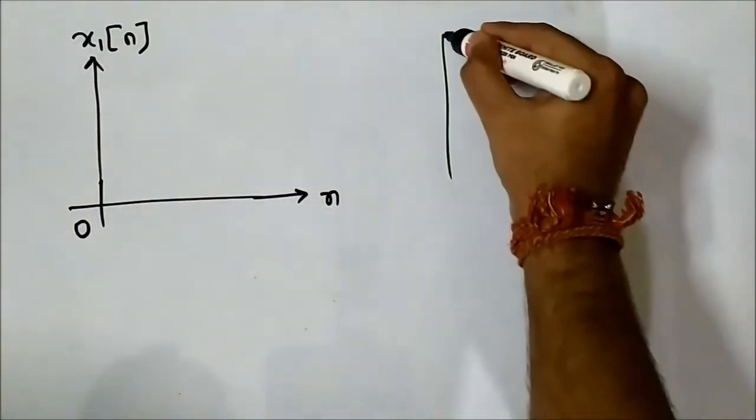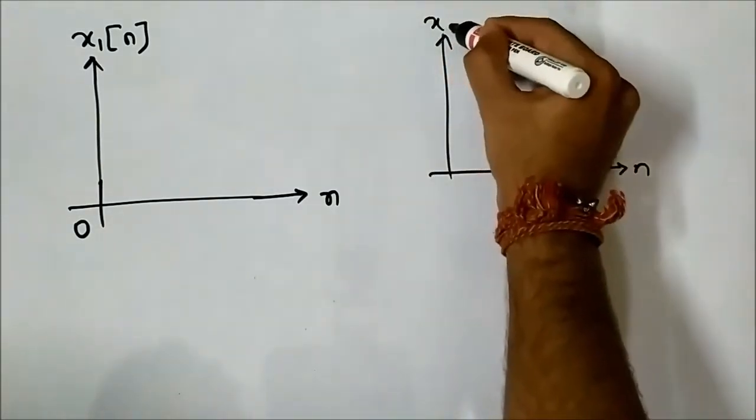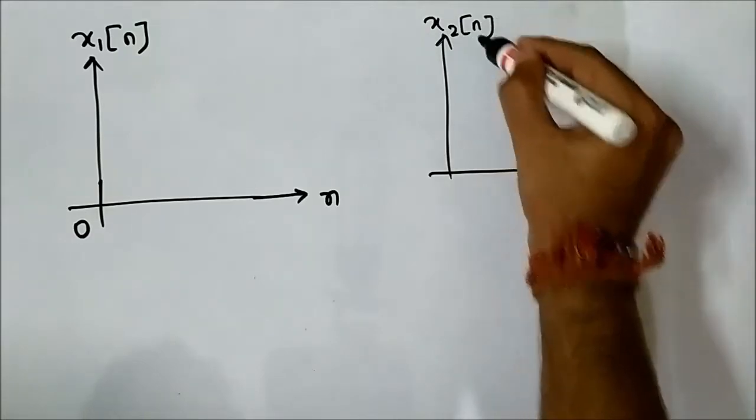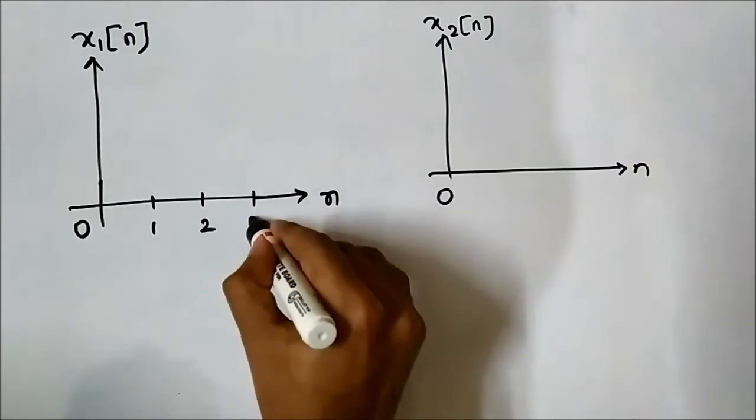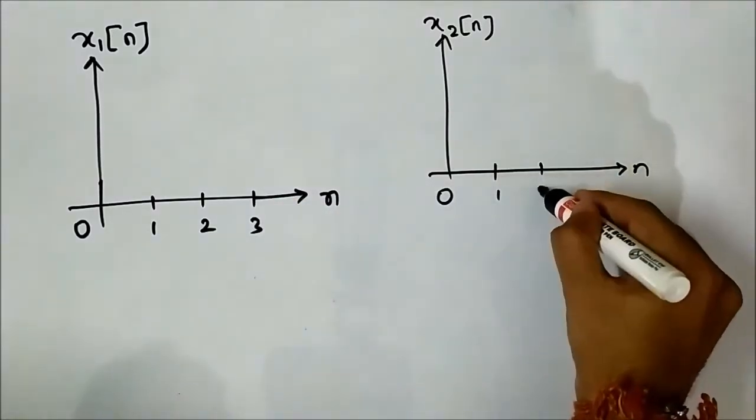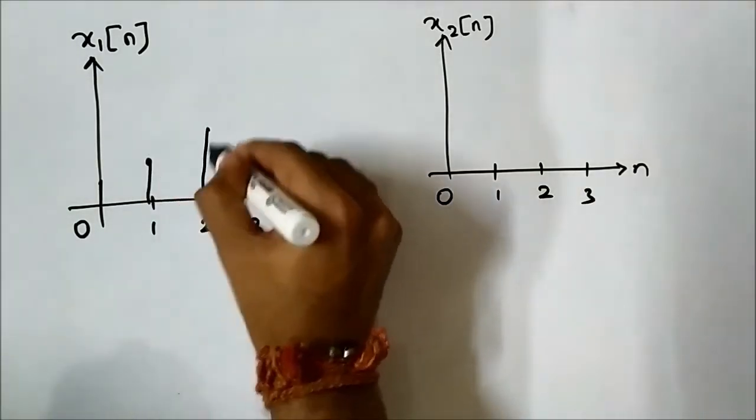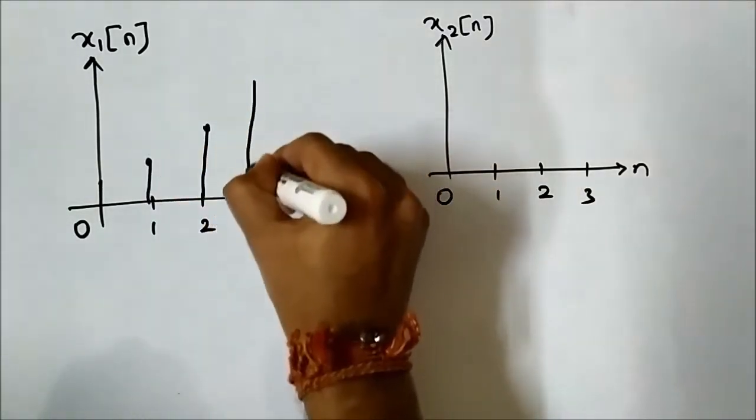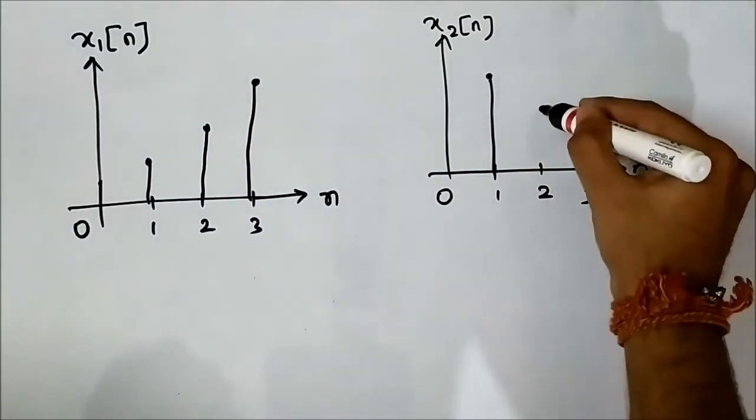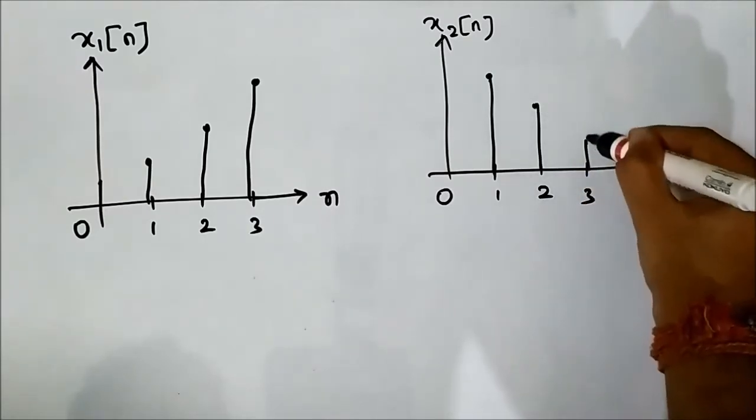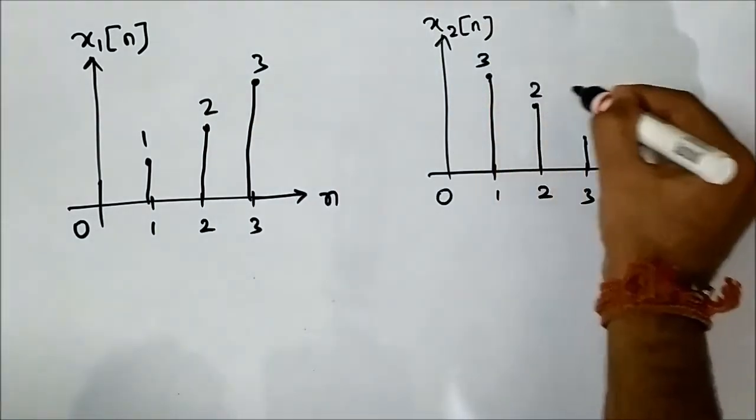Let their values be 1, 2, 3 and here let them be 3, 2, 1. So for x1[n]: 1, 2, 3 and x2[n]: 3, 2, 1.